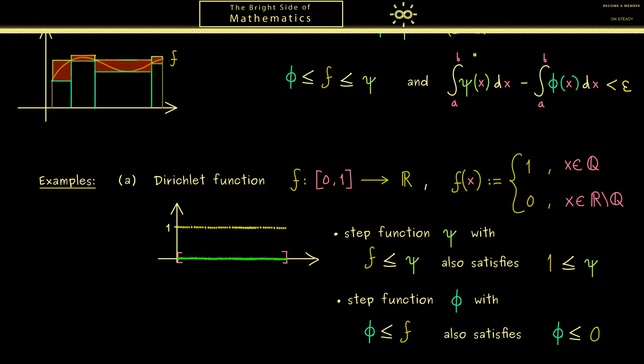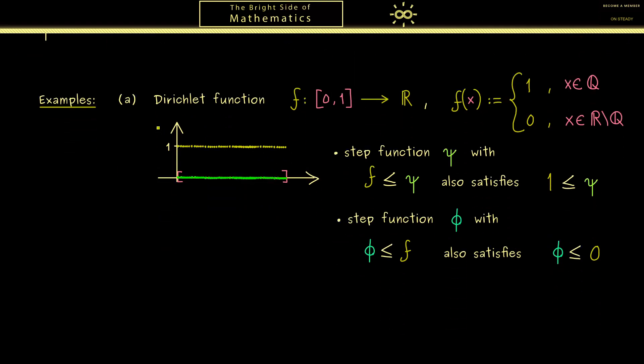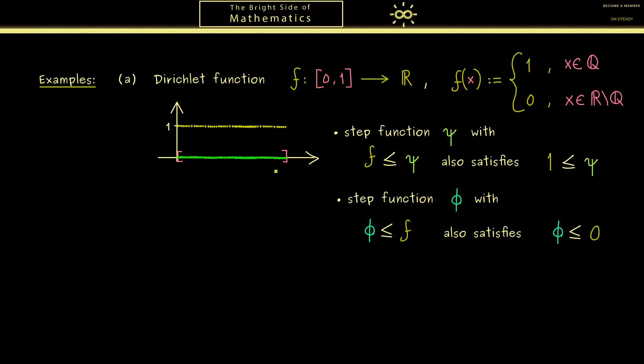And the conclusion will be we can't push the difference below 1. Of course the first integral will always be greater or equal than 1. And the other one always less or equal than 0. In other words we cannot fulfill this property for all epsilon. In fact this is all we need in order to show that the Dirichlet function is not Riemann integrable.